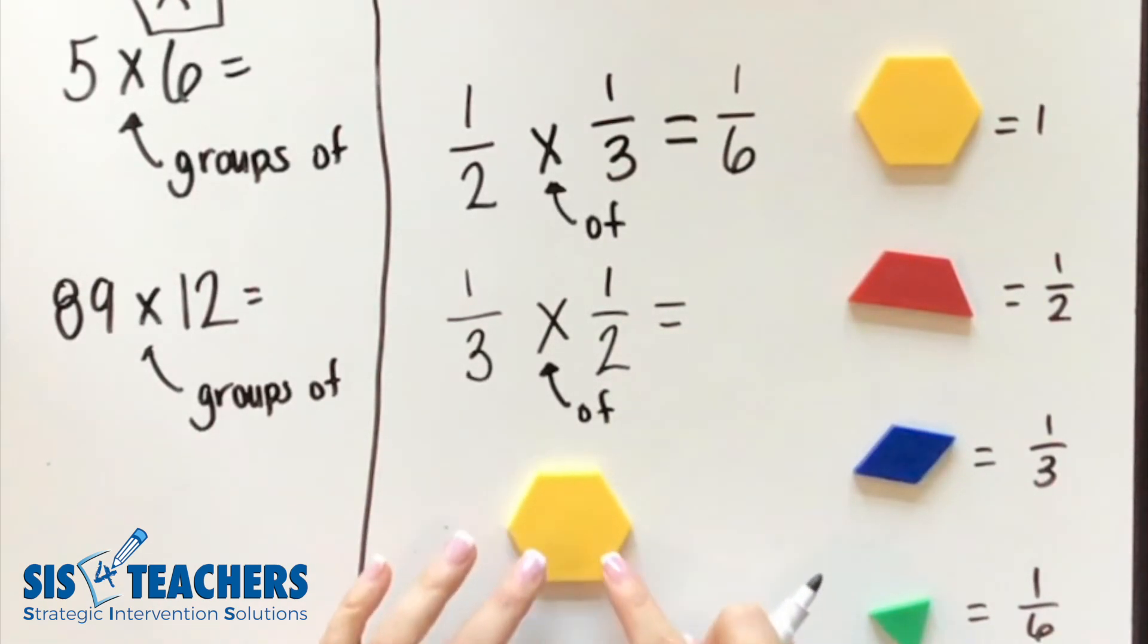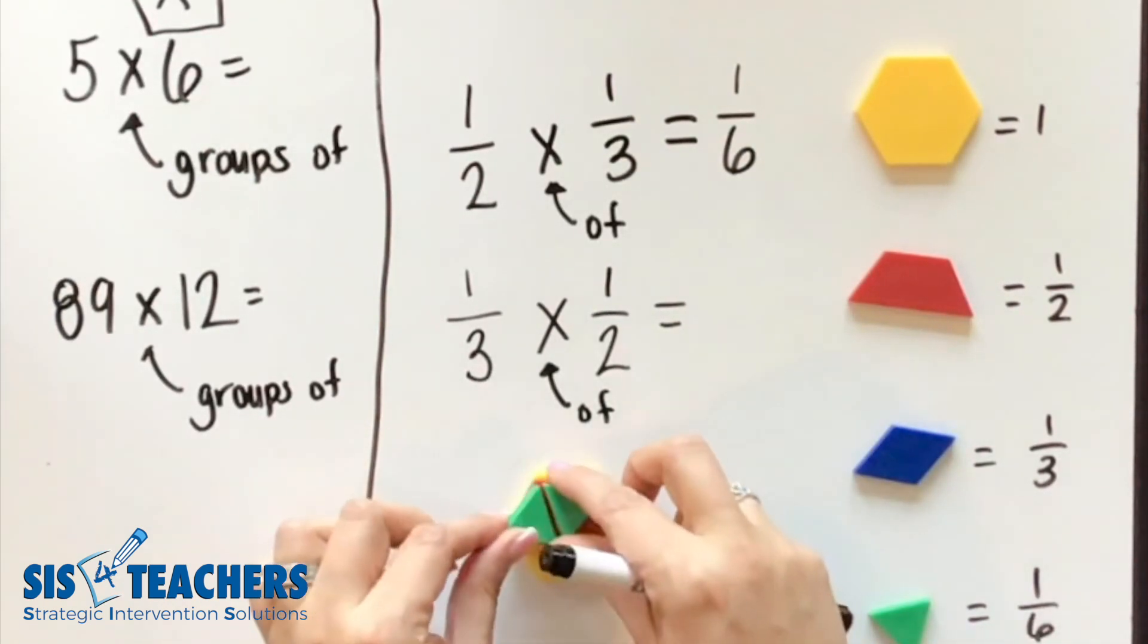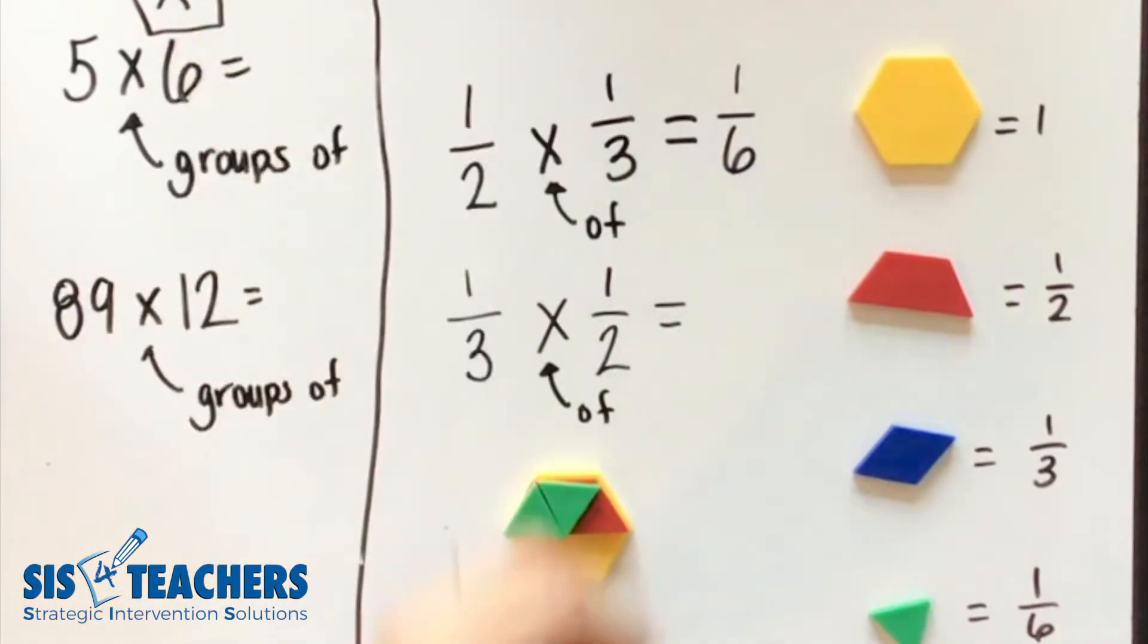It's one third of half. So I'm going to keep my whole so I can see it. I'm going to show the piece we're talking about, which is the half. It wants to know what one third of this piece is. I could certainly take my triangles to test out to make sure that three sixths equals one half, which it indeed does.